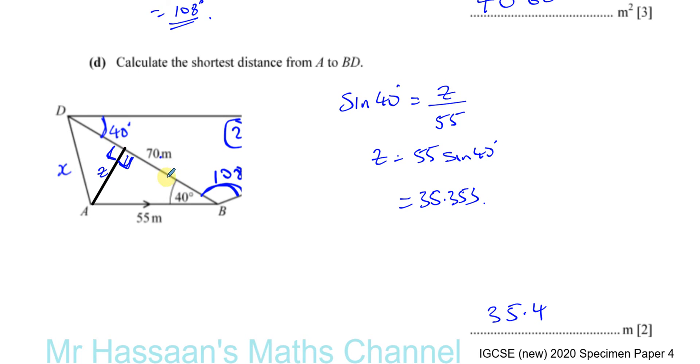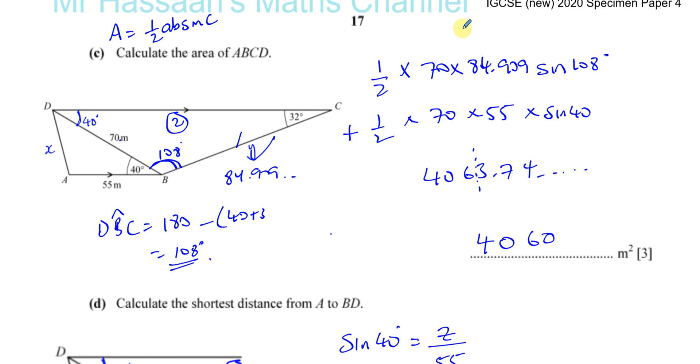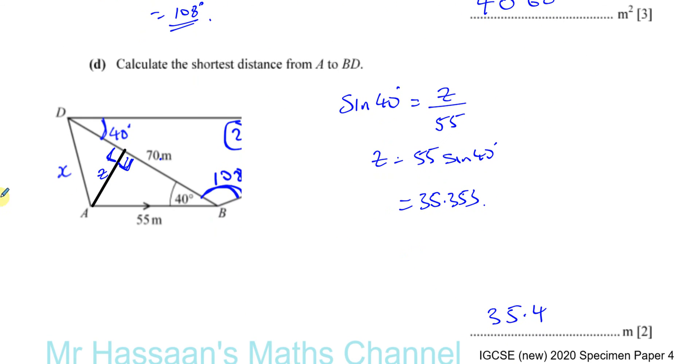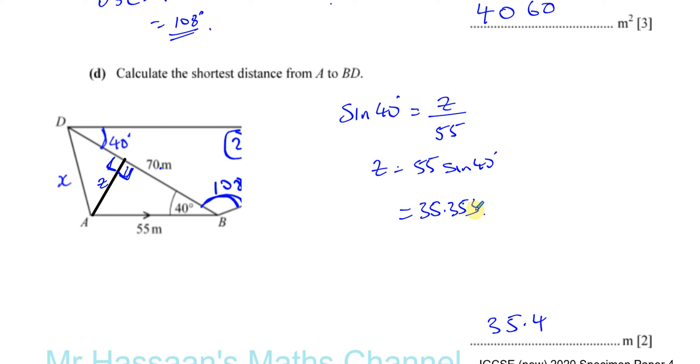We could have also done it another way. We could have said if we know the area of this triangle, a half times 70 times 55 times sine of 40. The area of that triangle is equal to half times 70 times Z. So half times 70 times Z will equal this, and the only thing you don't know is the Z, which is the vertical height. But this, I think, is easier in this particular case. And there's the answer to part D. And I think that was the end of the question.